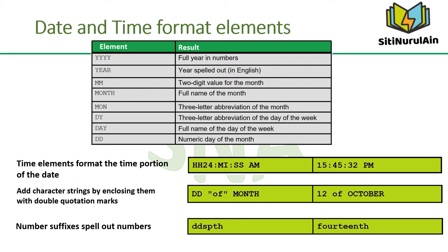TO_CHAR converts a datetime data type to a value of VARCHAR2 data type in the format specified by the format model. A format model is a character literal that describes the format of datetime stored in a character string. The table in the slide shows some of the valid format elements for the date.